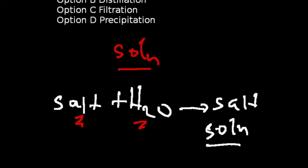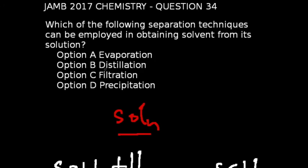We know from our residual knowledge that water has much lower boiling points than salt. So what we do is simply apply heat. Water will evaporate, leaving the salt behind. And this method is simply called distillation. So when we look at the options given to us, option B becomes the answer to this question.